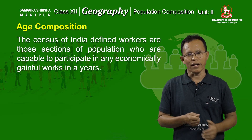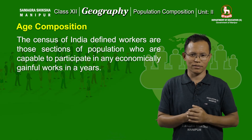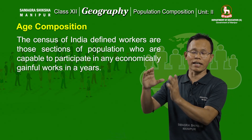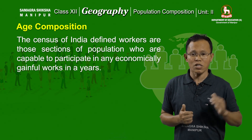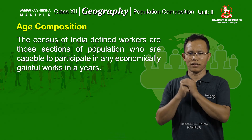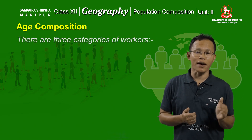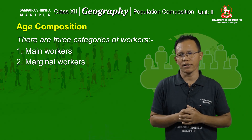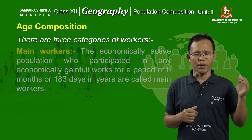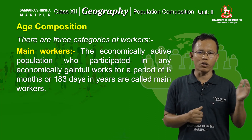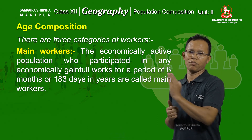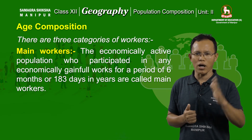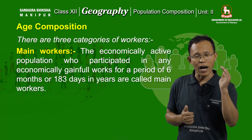The census of India has defined workers as those sections of the population that belong to the second age group and are capable of participating in any economically productive work in the year. There are three types of workers: main workers, marginal workers, and non-workers. Main workers are those belonging to the age group of 15 to 59 years who participate in economically gainful work for not less than 183 days in a year.